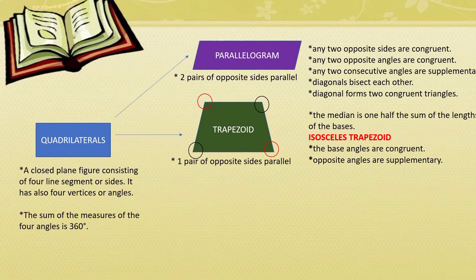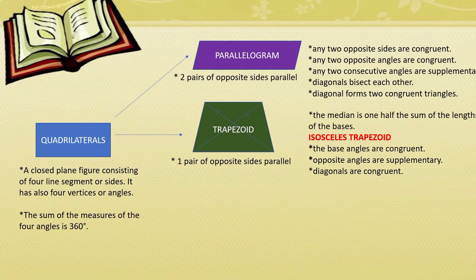Opposite angles are supplementary — the ones with the same color. So if we are going to add the opposite angles, their sum is 180 degrees. Diagonals are congruent. That's all about trapezoid.